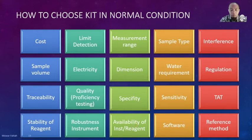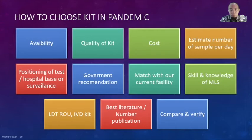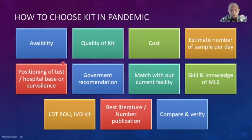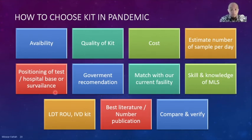In a pandemic, we have a different way to choose the kit. Availability is very important because no kit means no quality. Other considerations include cost, estimated number of samples per day, positioning of the test — hospital-based, for diagnosis, or for surveillance — and whether government recommendations match our current facility.